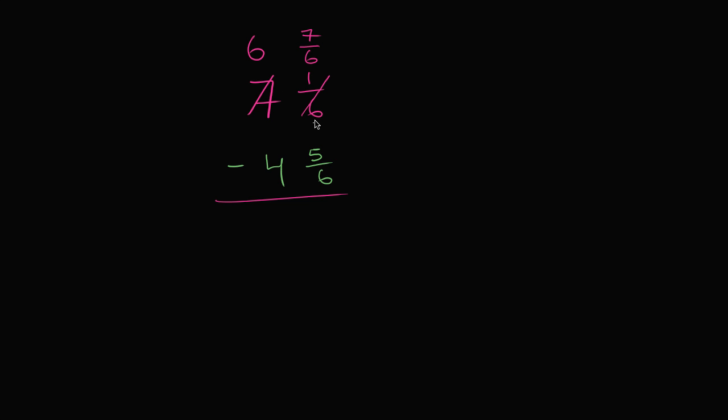Let me be clear what I did. I took 1 from the 7 and it became 6. And 1 is equal to 6 sixths. So I added 6 sixths to that 1 sixth and I got 7 sixths. I took the 1 from here and added it over here. The whole purpose is now 7 sixths is greater than 5 sixths.